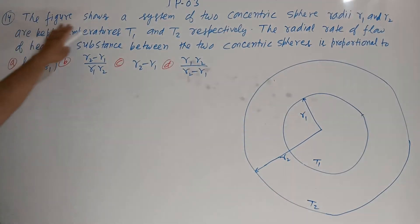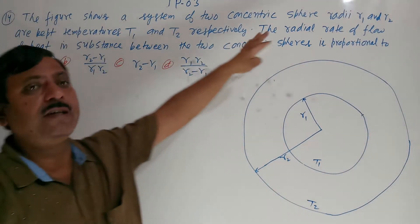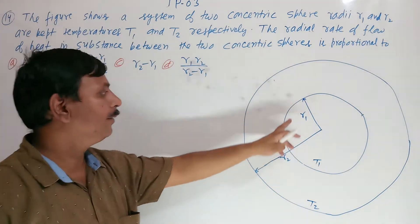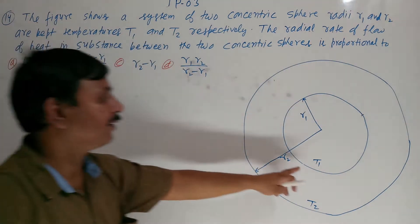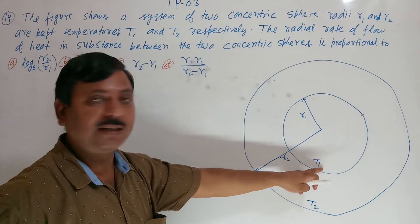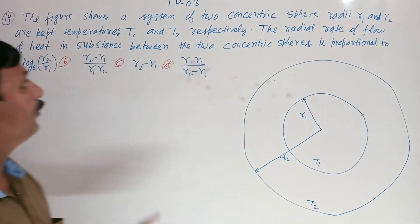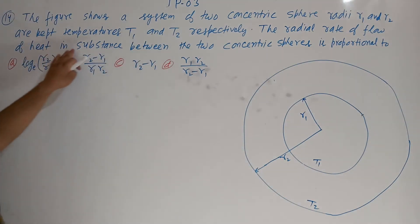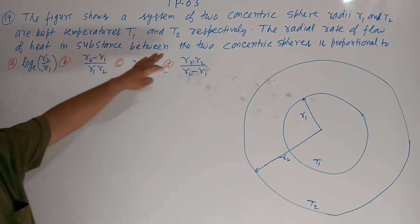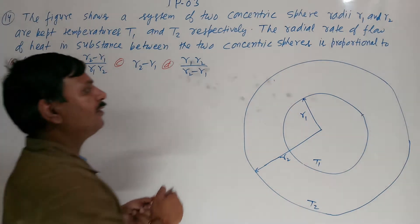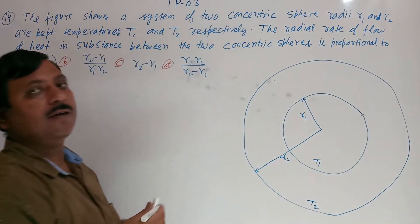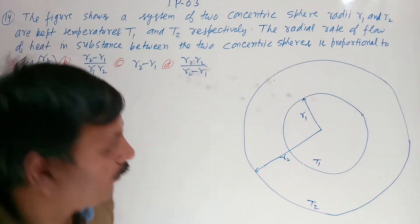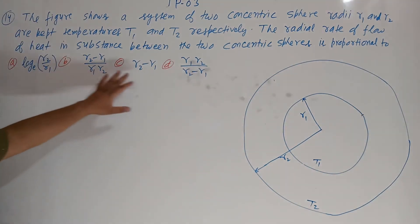One problem is there. The figure shows a system of two concentric spheres with radius R1 and R2, kept at temperature T1 (inner) and T2 (outer). We have to find the radial rate of flow of heat in the substance between them — what will the radial flow be proportional to?